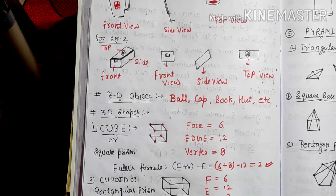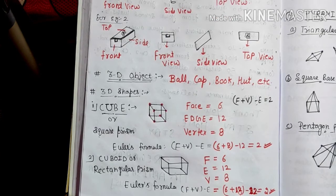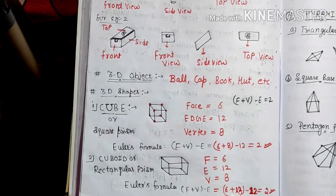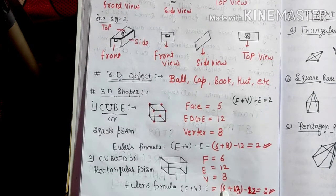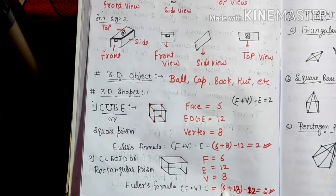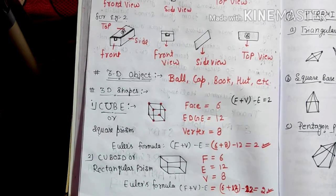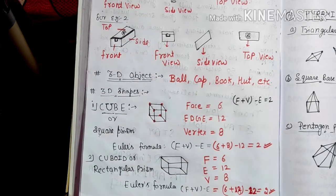You should know the definitions of face, edge, and vertex — write all three definitions in your fair notebook. Euler's formula for a cuboid: faces are 6, vertices are 8, so 6 plus 8 equals 14, and 14 minus 12 equals 2.